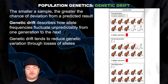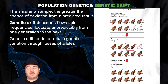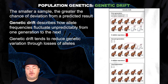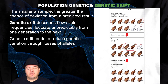What is genetic drift? Genetic drift describes how allele frequencies fluctuate unpredictably from one generation to the next. This is typically seen in small populations. The smaller the sample, the greater the chance of deviation from the predicted result. Genetic drift tends to reduce genetic variation through losses of alleles.